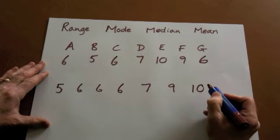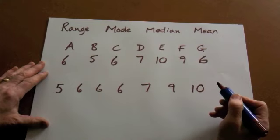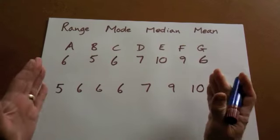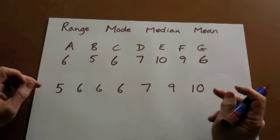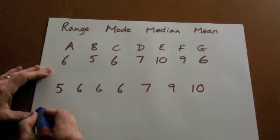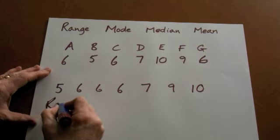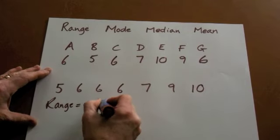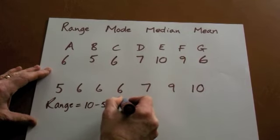Now that they're in order, we know that the range is easy to spot. That's the difference between the lowest and the highest score. So range: ten take away five is five. So the range is the highest take the lowest, which is five.